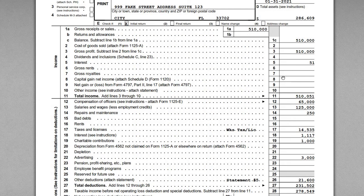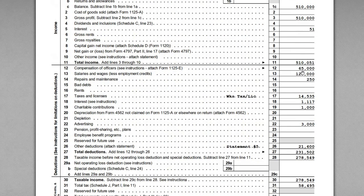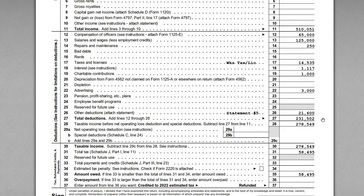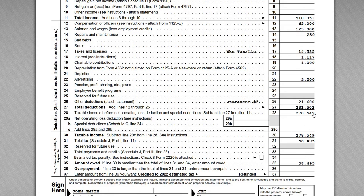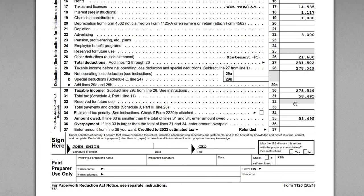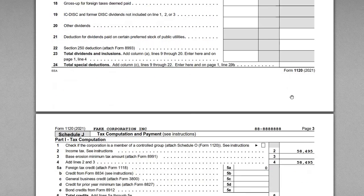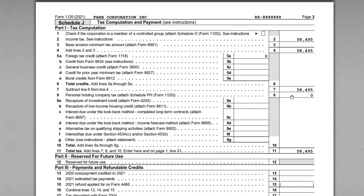We have total gross receipts of $510,000, some taxable interest income of $51, and then various expenses including compensation of officers, salaries and wages, and so on. This is a company engaged in marketing consulting. The taxable income is $278,000, the 21% tax rate yields $58,495, and moving through the 1120 we can see all the relevant schedules that need to be completed.